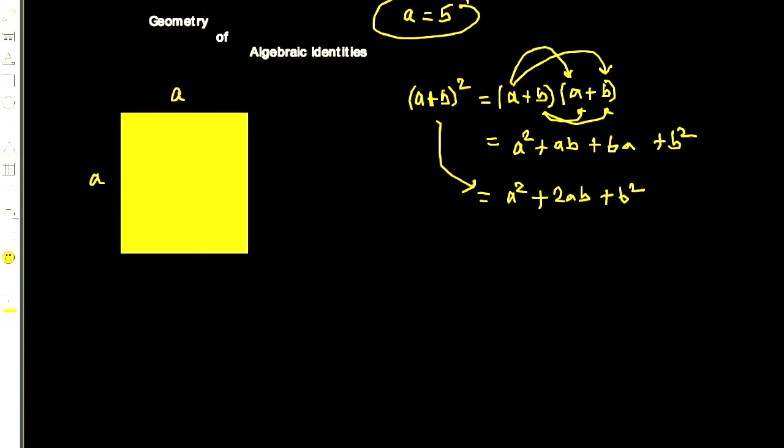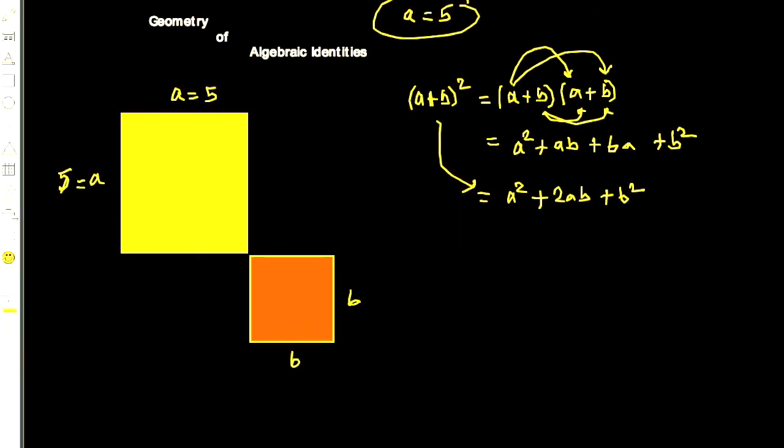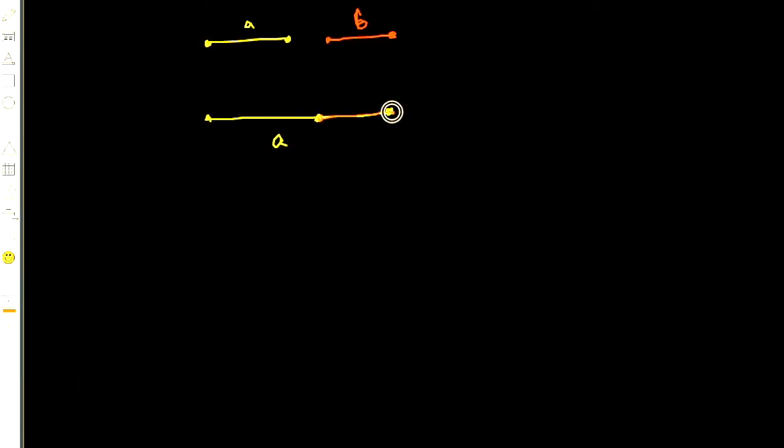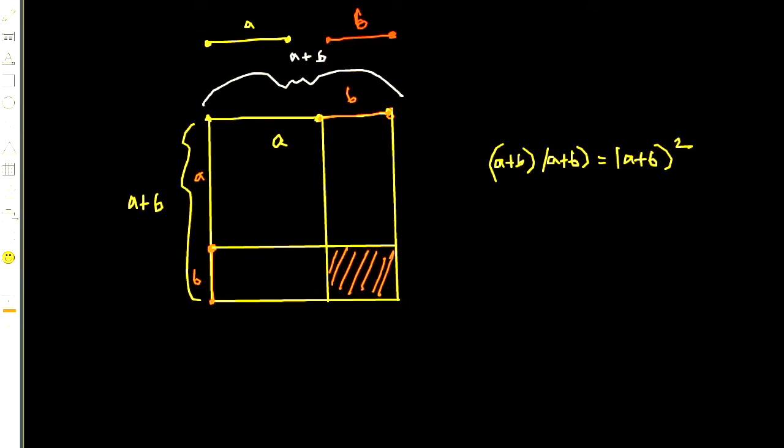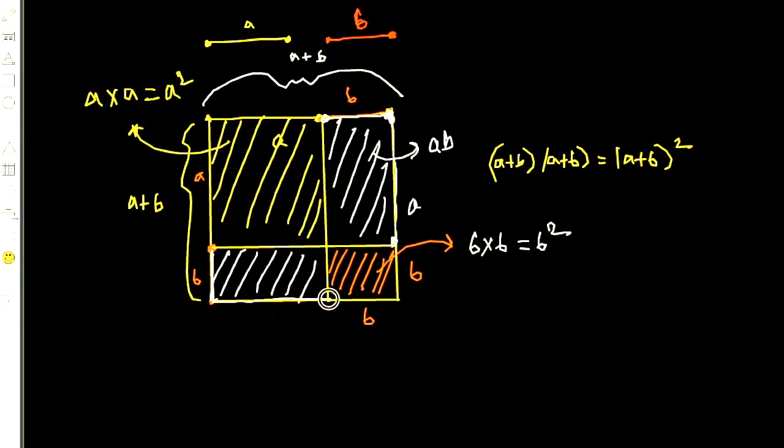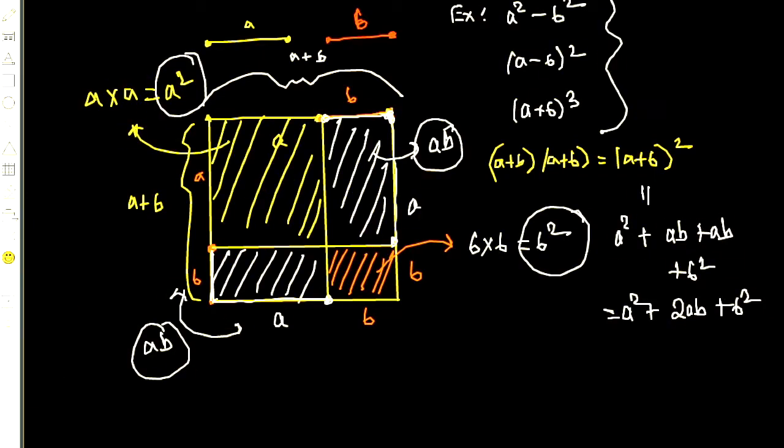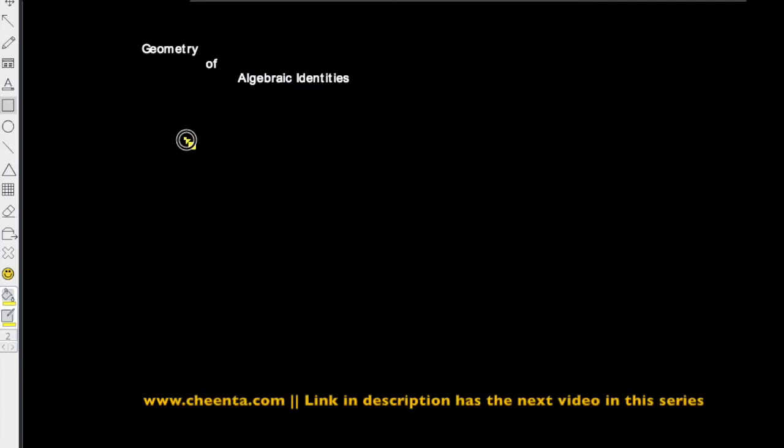Hello, one of the most exciting combinations of geometry and algebra is related to algebraic identities and how to represent them using areas. So let's look at an example. Suppose we want the picture of (a+b)².